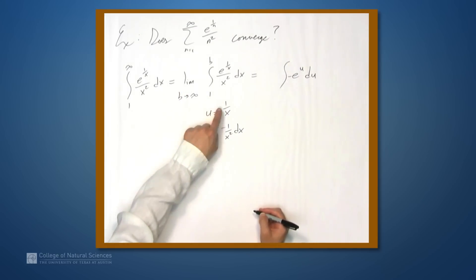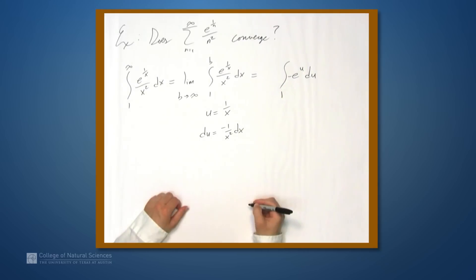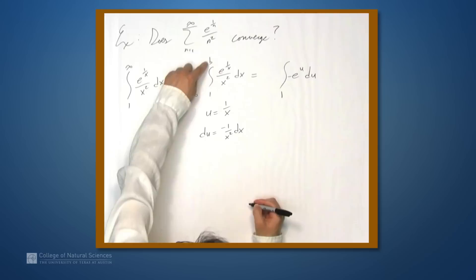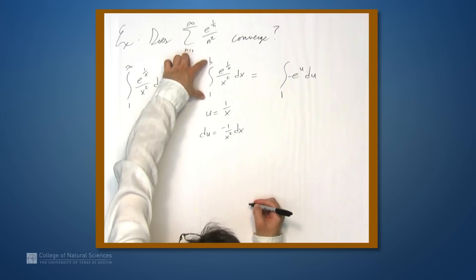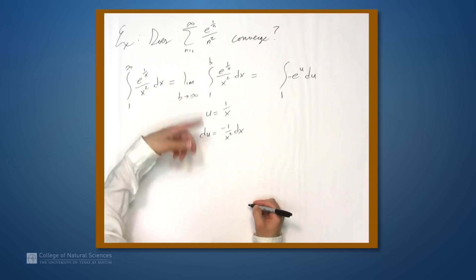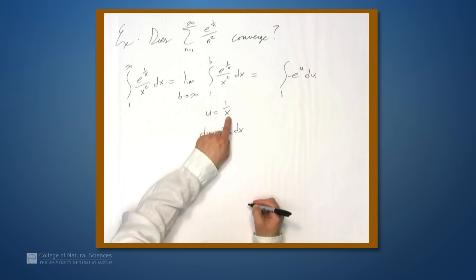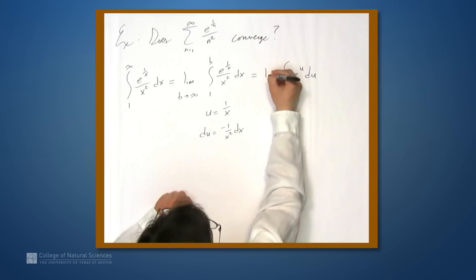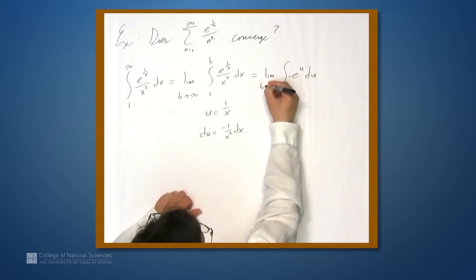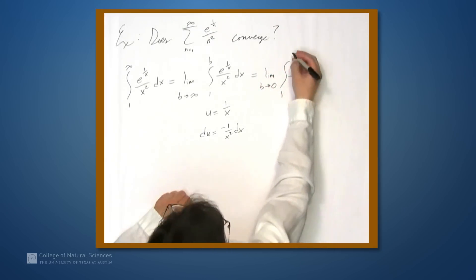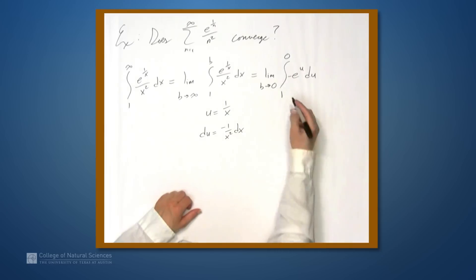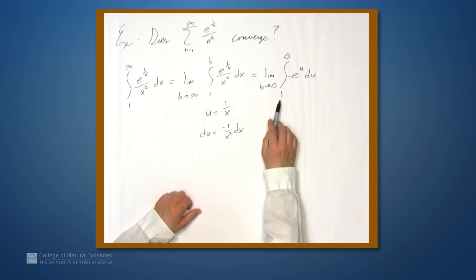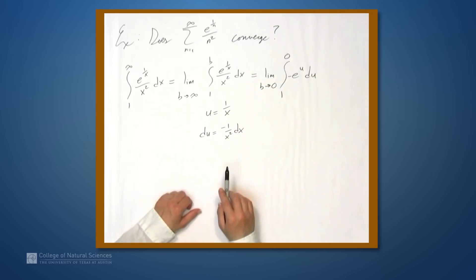Now we change our limits of integration. When x equals 1, u equals 1 over 1, so u equals 1. As x goes to infinity — that is, as b goes to infinity — u equals 1 over x approaches 0. So the upper limit of integration becomes 0, and we have the limit as b approaches 0 of the integral from 1 to b of negative e to the u du.